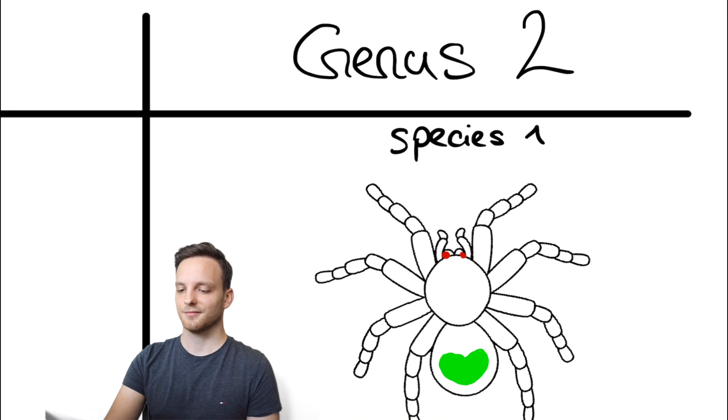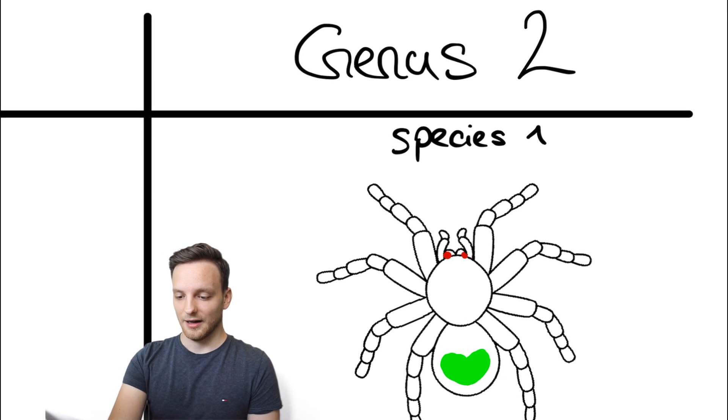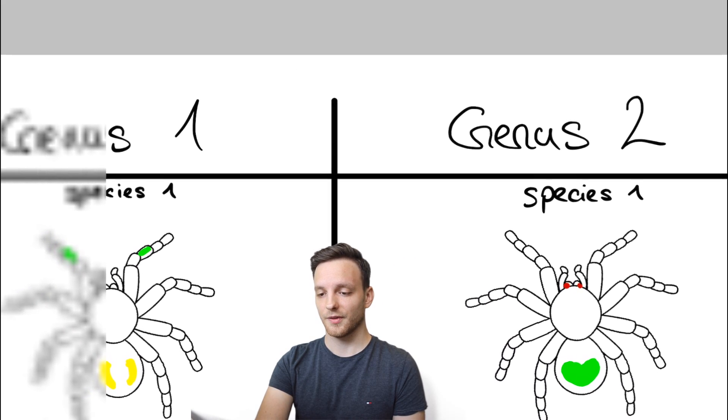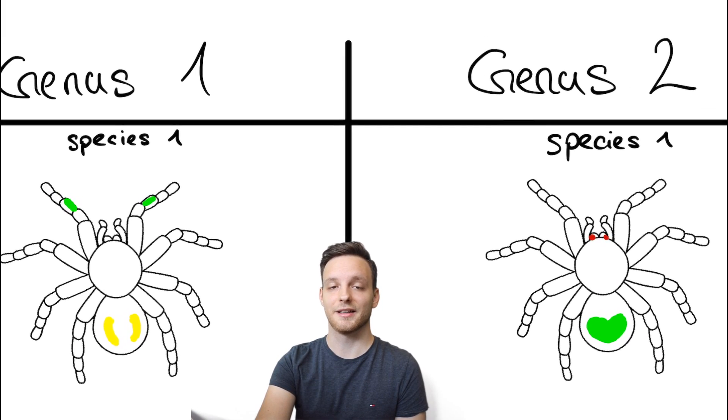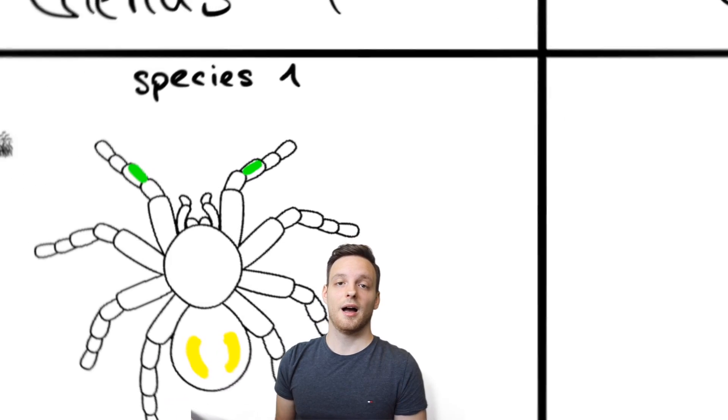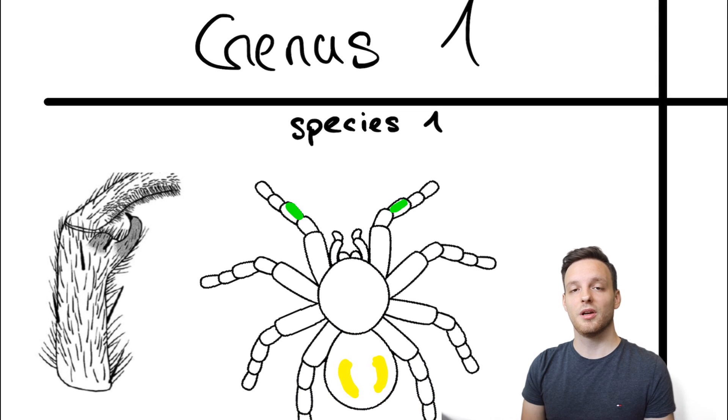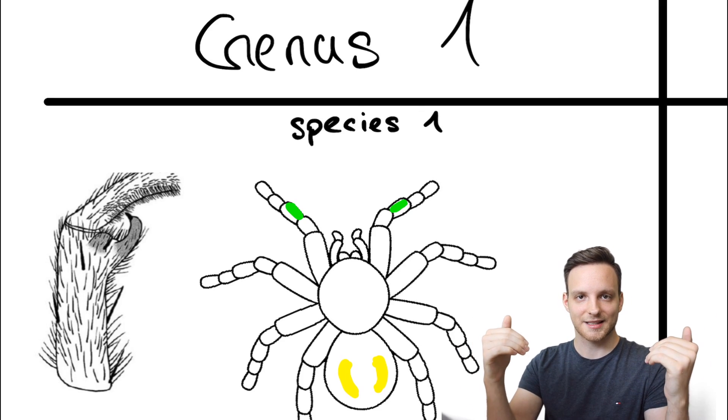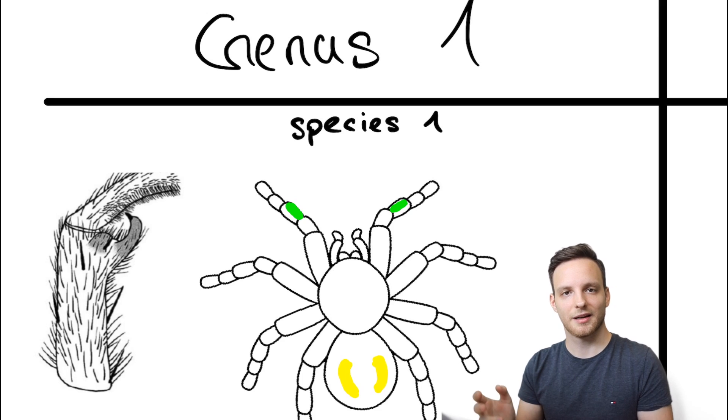We are going a little bit further and see how it translates. Genus one species one on the left side you're seeing a picture which is the tibia apophysis for males like the tibial spurs. They have little hooks on the first pair of legs. When they are mating with the females they can put the fangs into these kind of spurs. So the male is a little bit more safe.